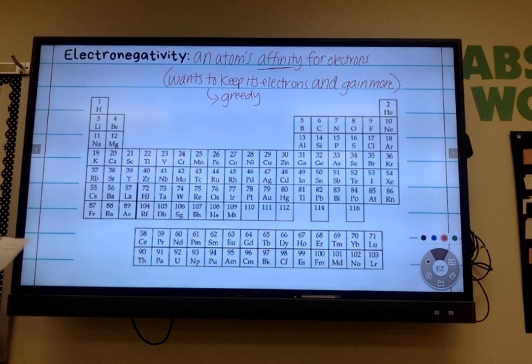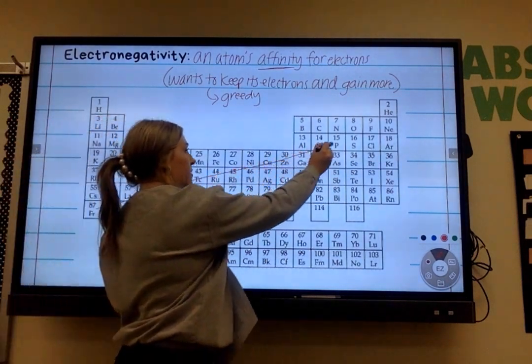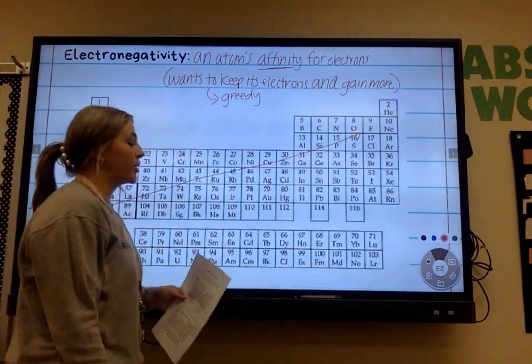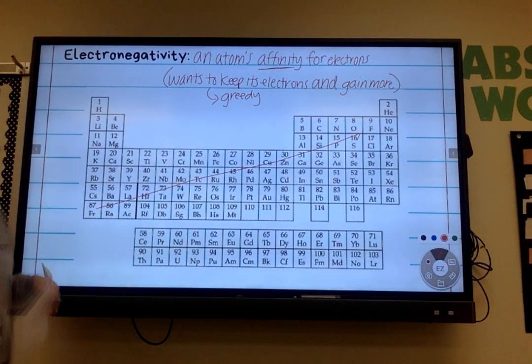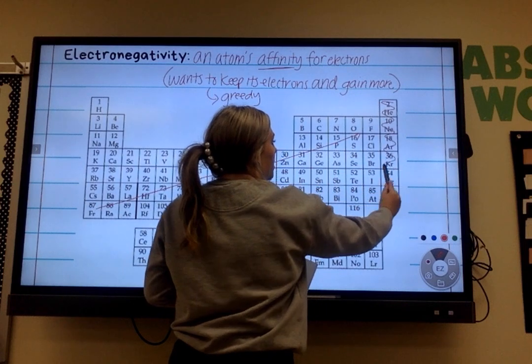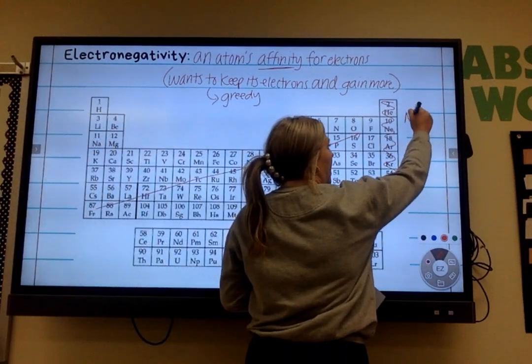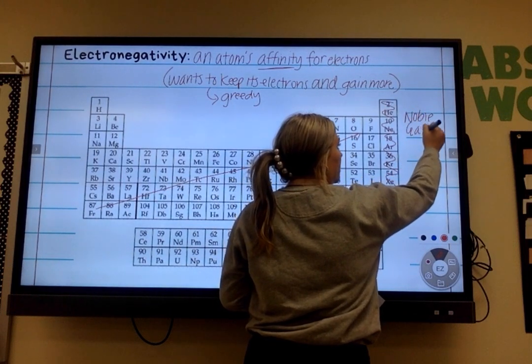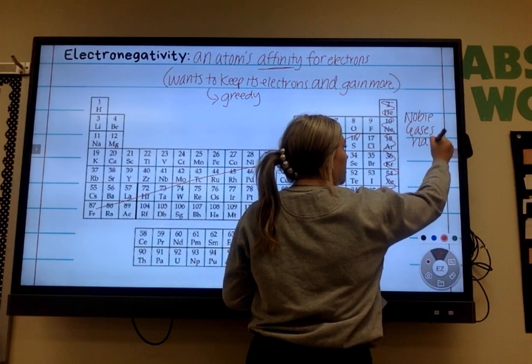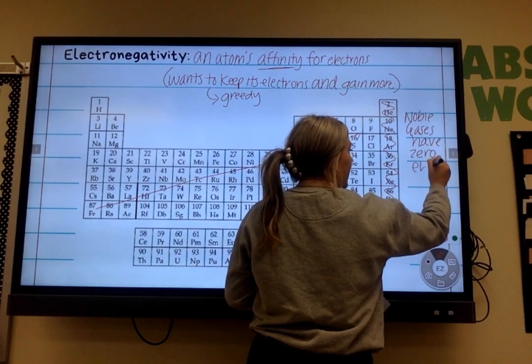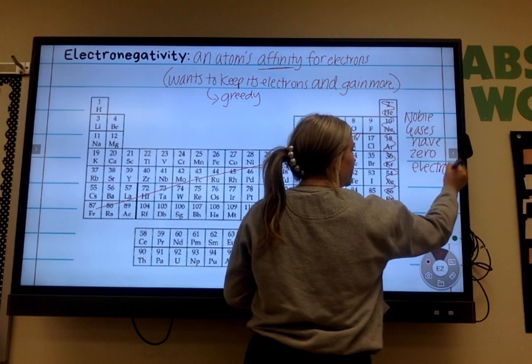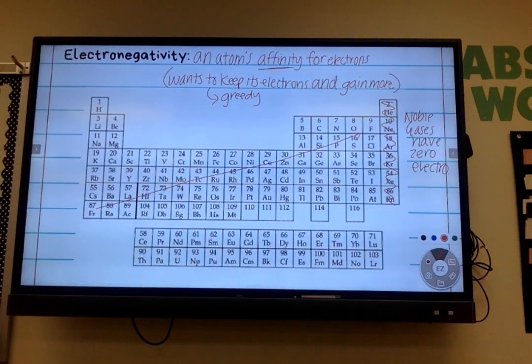The trend for this, so the arrows is going to be going up like this. You're actually going to stop at F, fluorine. I want you to make note that the noble gases are not applicable here. Make sure you write that noble gases have zero electronegativity. To explain why on that.